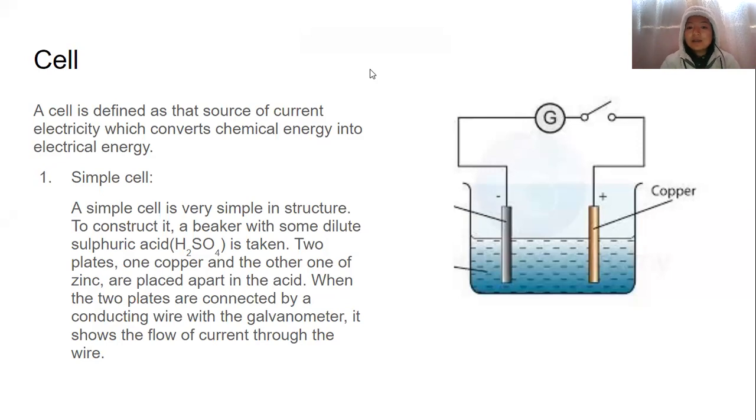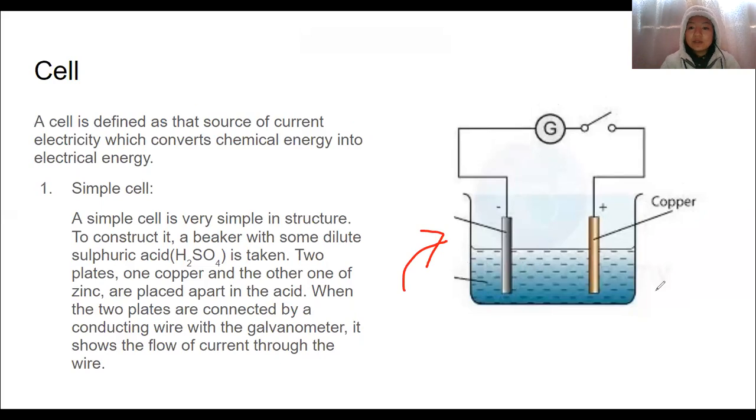This is the diagram of a simple cell. A simple cell consists of a beaker. Inside the beaker, we place electrolyte. Electrolyte could be an acid, an alkaline, or a salt solution. There are two metallic plates or electrodes. Here, we have taken zinc electrode and copper electrode.